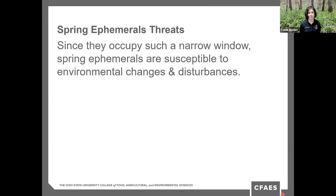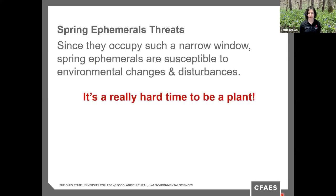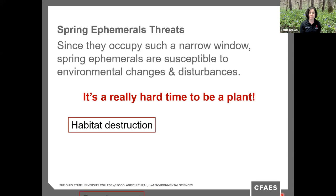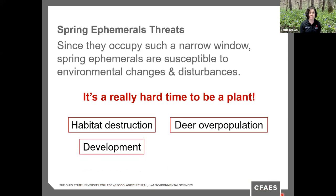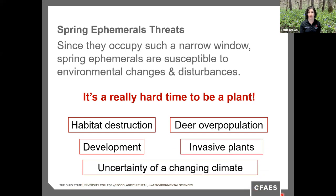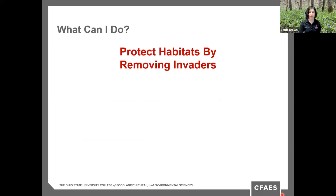Since spring ephemerals occupy such a narrow window, they're susceptible to environmental changes and disturbances — remember, it's a hard time to be a plant, which is why everything else is still dormant. Many factors can have a negative impact on these spring beauties, including habitat destruction, development, deer overpopulation, invasive plants, and the uncertainty of a changing climate. So what can we do? We can start by removing the invaders.